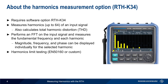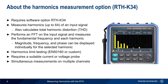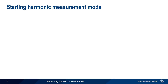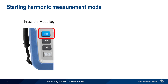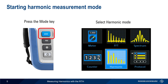Note that measuring current harmonics requires either a suitable voltage or current probe. And although this presentation only shows measurements on a single channel, the RTH also allows harmonic measurements to be performed, and results displayed, on all channels simultaneously. Starting harmonic measurement mode is very easy — simply press the Mode Hard key on the front of the RTH, and then select Harmonic from the list of available modes. In the remainder of this presentation, we'll go step-by-step through how this mode is configured and used to measure harmonics.